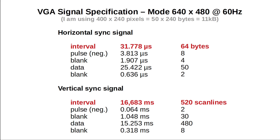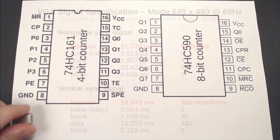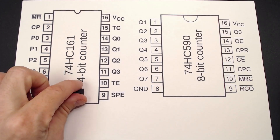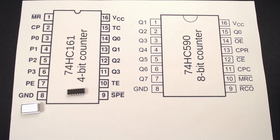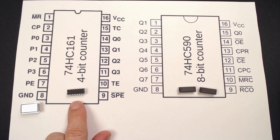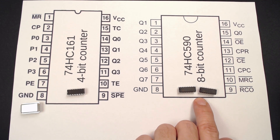With that out of the way, we can merge all counting into one single 16-bit counter — the lower 6 bits for the horizontal timing and the remaining 10 upper bits for the vertical timing. Besides the oscillator, we need a 4-bit counter to subdivide the pixel clock into byte ticks, and we need two of these cascaded 8-bit counters.